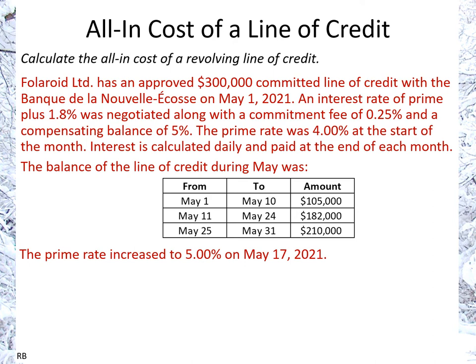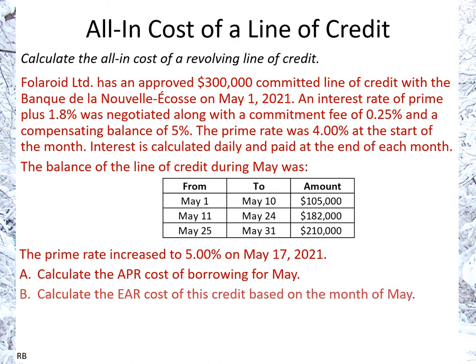During the month, the prime rate increased to 5% on the 17th of May, 2021. First, we want to calculate the APR cost of borrowing for May, and then we also want to calculate the EAR cost of this credit based on the month of May — the annual percentage rate and the effective annual rate.